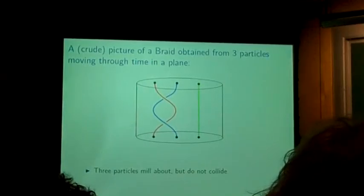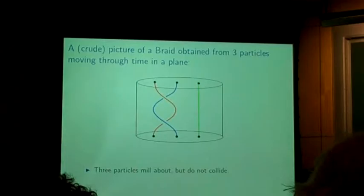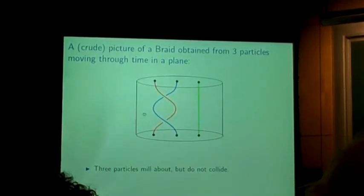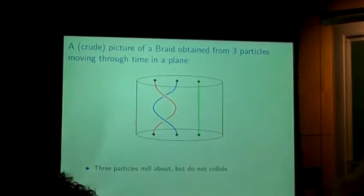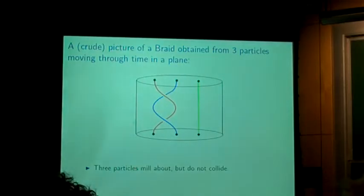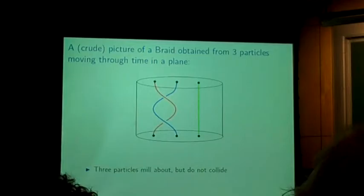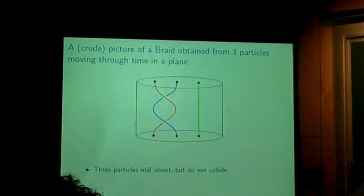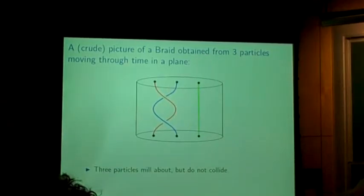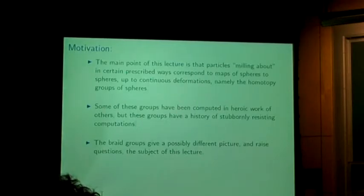There's a crude picture of a three-stranded braid. Think of that disc at the top of the cylinder — three distinct particles — and as these particles move through time, they move down. As long as the particles are not allowed to collide, they give you a picture of something called a braid. You might cavalierly think these are a frivolous object, but let's see if I can say something about that.